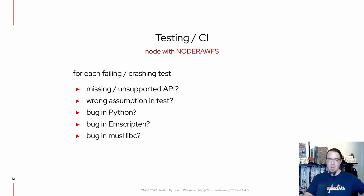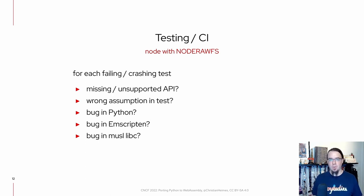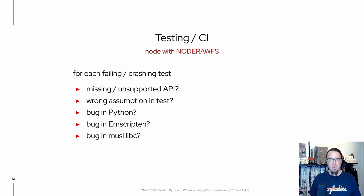Once we had everything working more or less, we wanted to make sure our tests were passing. I used Node with raw file system access because I couldn't figure out how to run the tests in the browser, and with Node it was more similar to running things on the command line. For each of the failing or crashing tests, I had to check: is this caused by a missing or unsupported API? Is there a wrong assumption in the test? Maybe a bug in Python, maybe a bug in Emscripten, or there were even some known bugs in musl libc.